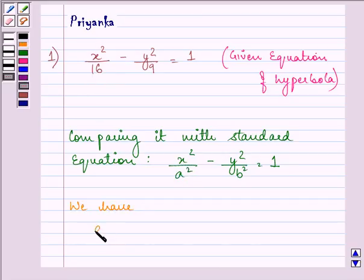We have a square is equal to 16. That means a is equal to plus minus 4, whereas b square is equal to 9. That is b is equal to plus minus 3.